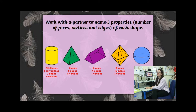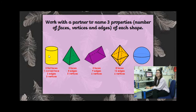Let's have a look at some properties. Here we have two flat faces, one curved face, and two edges — you can see those. Zero vertices. Why zero vertices on a cylinder, Alfie? Because it's circular — we've got two circular faces, which means we haven't got any vertices.